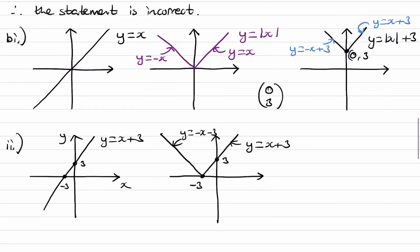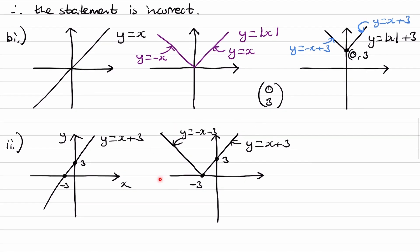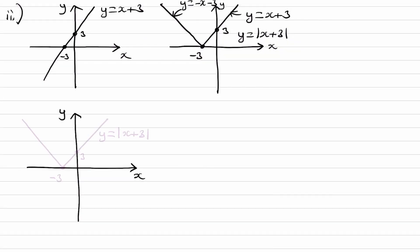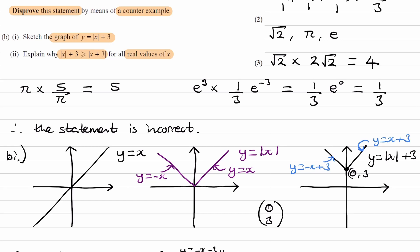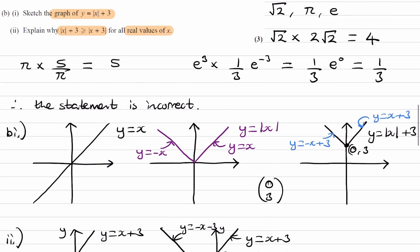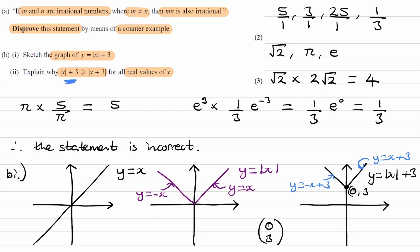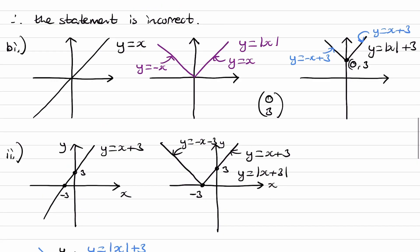Let's draw both graphs on the same set of axes. Here is y equals modulus of x plus 3 (the graph from part 1), and in blue, y equals modulus of (x plus 3). The question asks us to show that modulus of (x plus 3) — the blue modulus function — is bigger than modulus of x plus 3, which is the purple V-shaped graph.